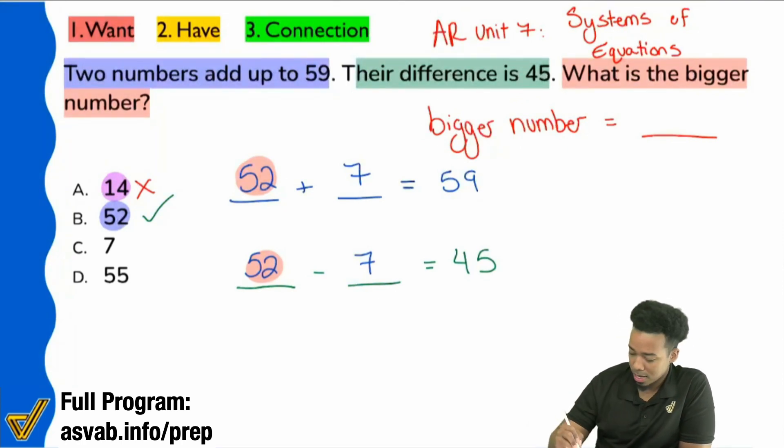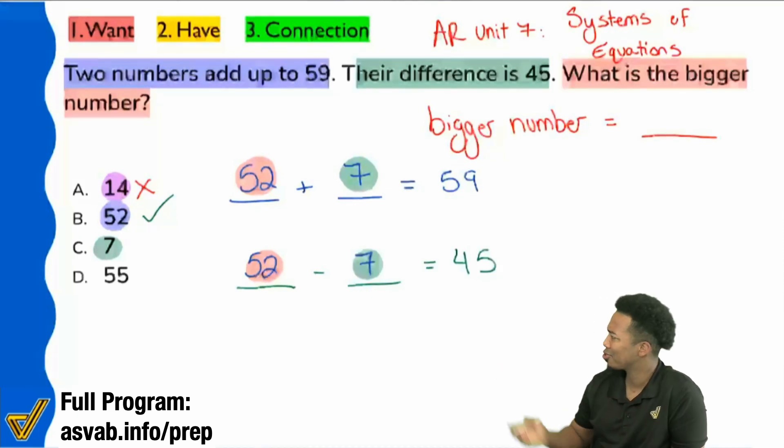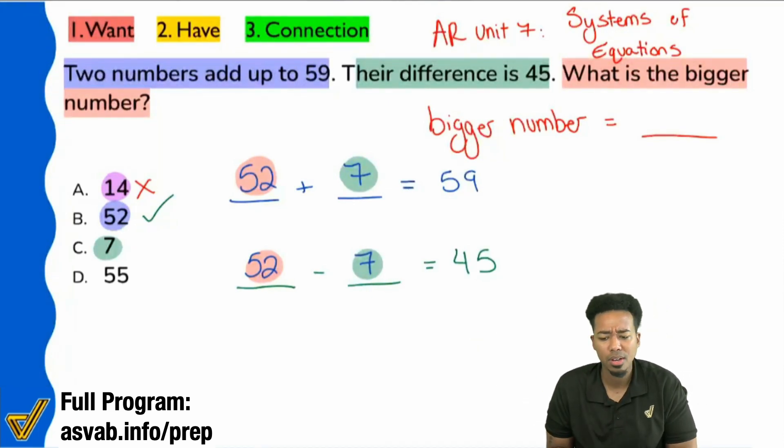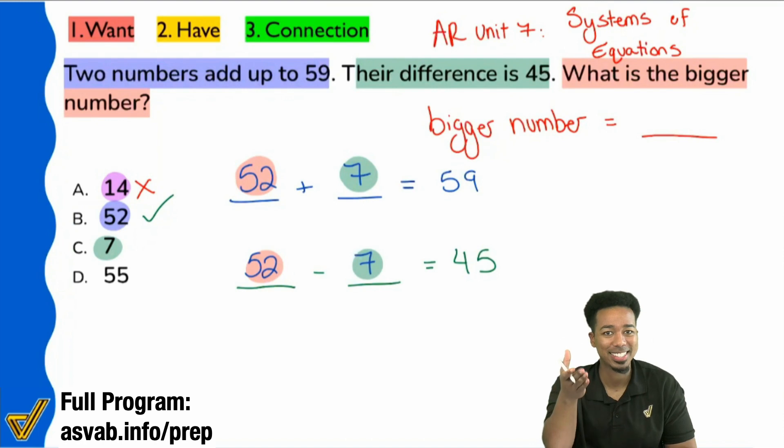Notice how we had another answer choice here. We had seven. Seven was right there. My party people, why is seven not the answer, even though seven works? Why is seven not the answer? Because it's the smaller number. Exactly. It is the smaller number.